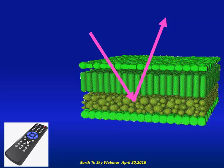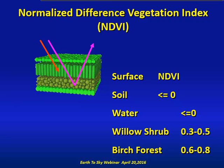Fortunately, vegetation canopies are the only natural surface that have a relatively high near-infrared reflectance compared to red reflectance. We use this contrast to compute a vegetation index called the Normalized Difference Vegetation Index, or NDVI.